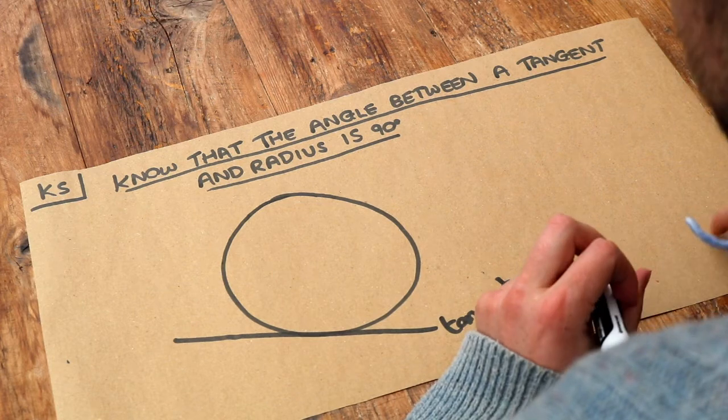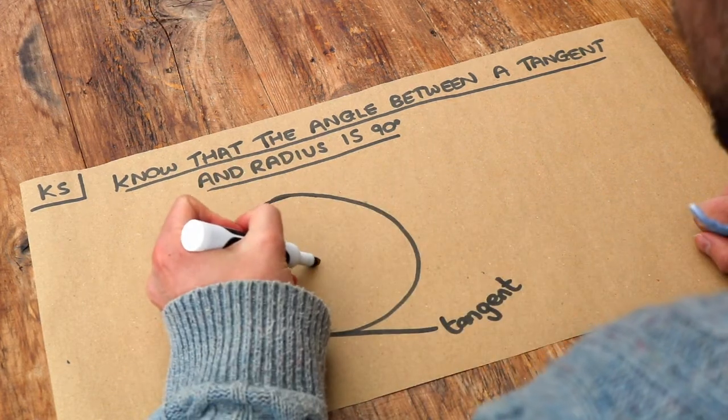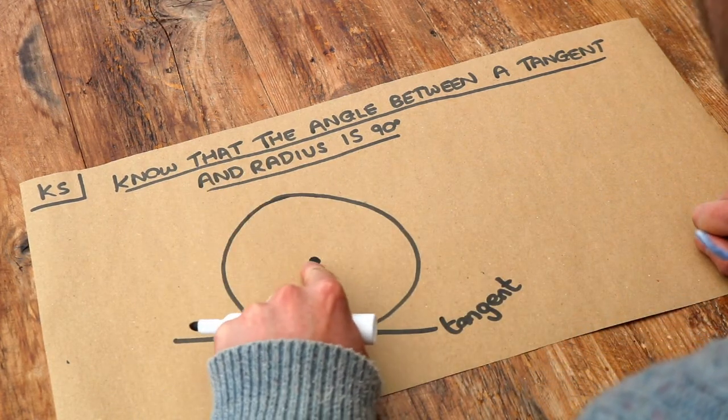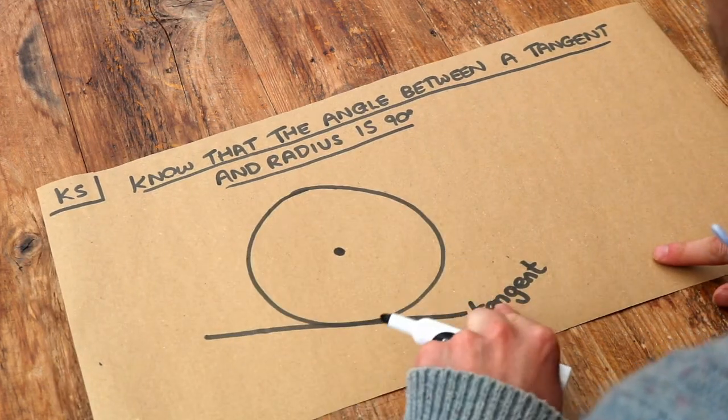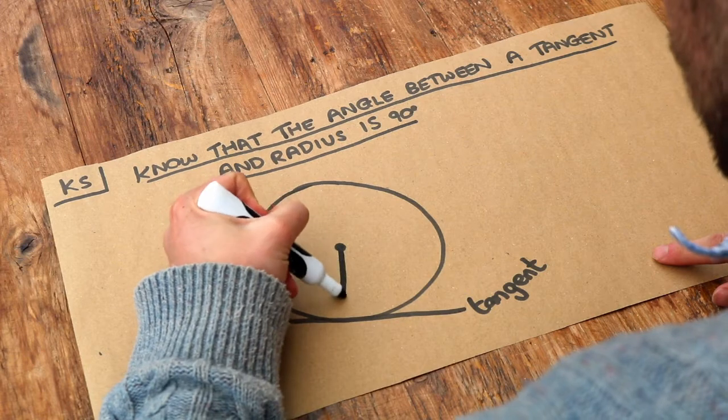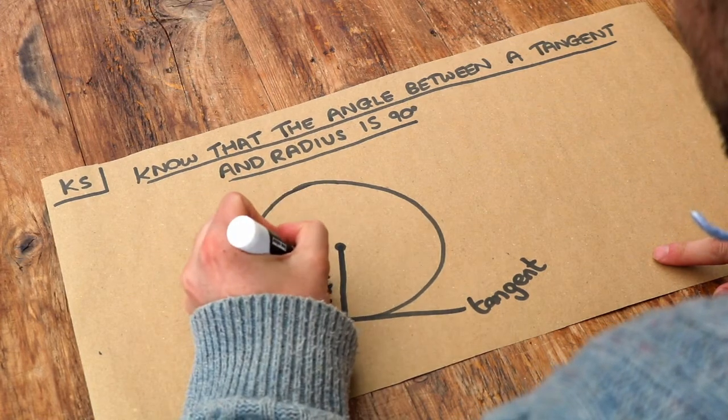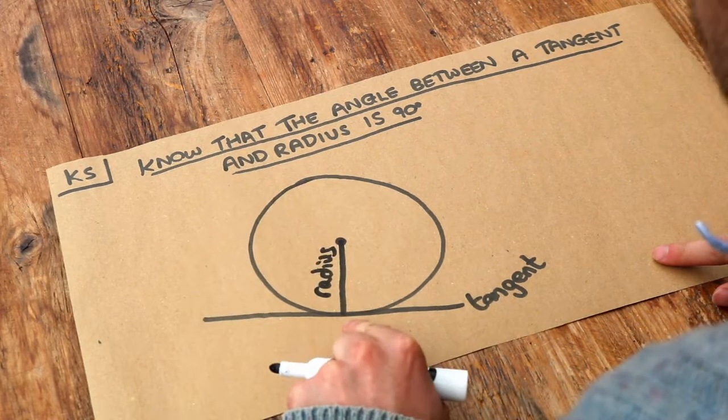And a radius is just a line that goes from the center of the circle to some point on the circumference. So we want this radius to touch the tangent. The radius and the tangent here are going to meet at a particular point on the circumference.